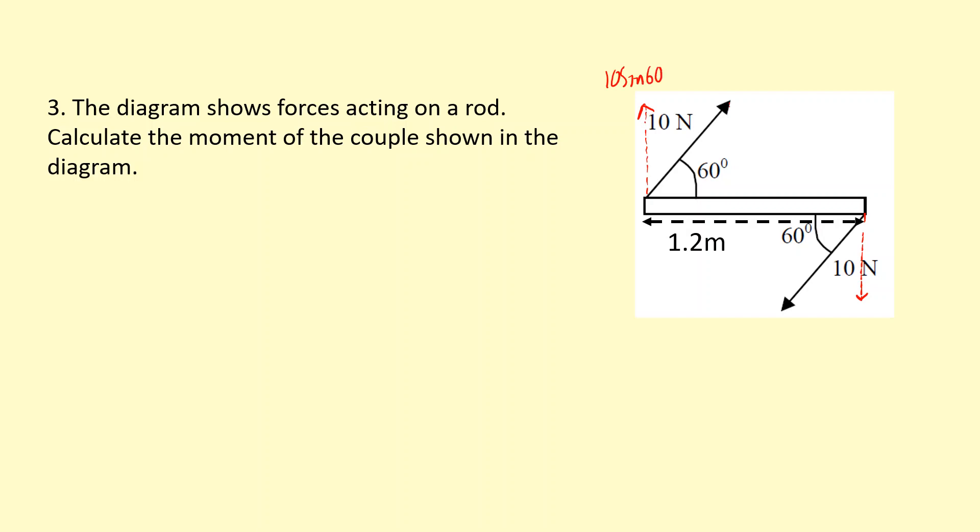And I just need to multiply by the distance here. So the moment is going to be the force, which is 10 sine 60, times the distance between the two forces, which is 1.2. That gives me a total turning effect of 10.4 newton meters.